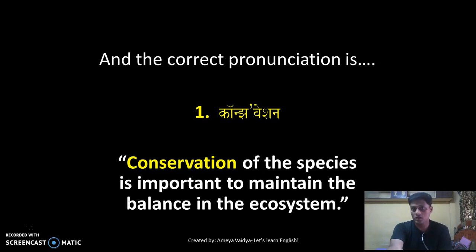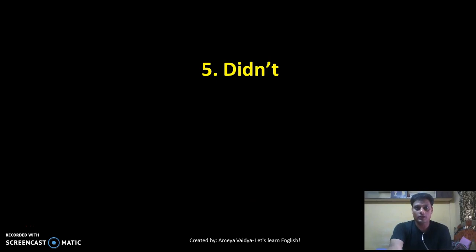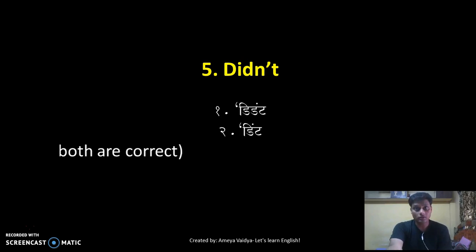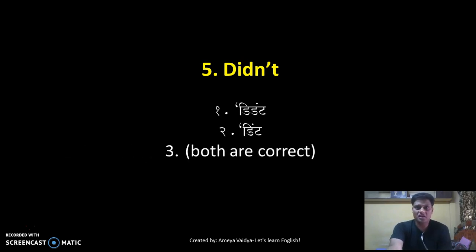Number five — halfway mark! D-I-D-N apostrophe T. Should I say 'didn't,' should I say 'didn't,' or can I say it either way? Option one is 'didn't,' option two is 'didn't,' or option three: both are right. Your thinking time starts now.